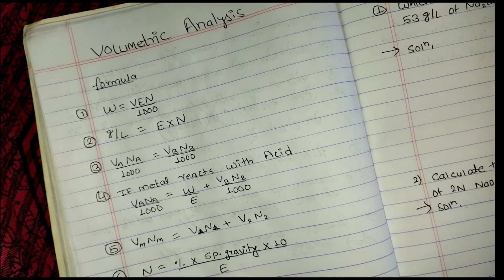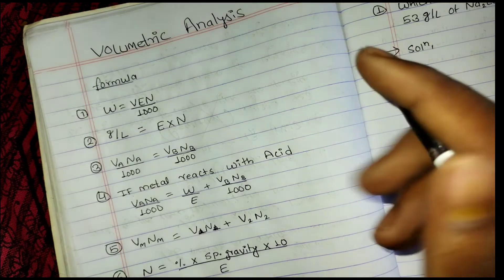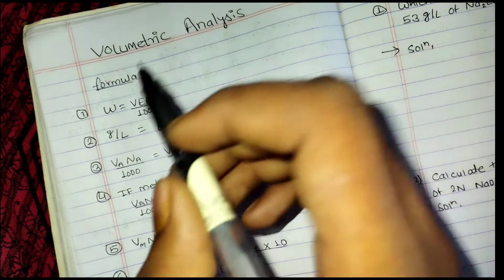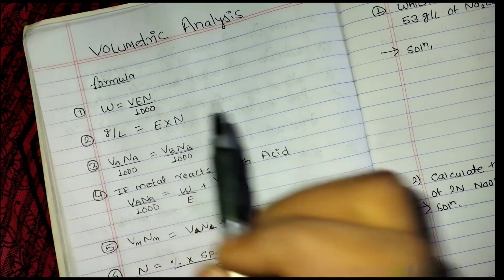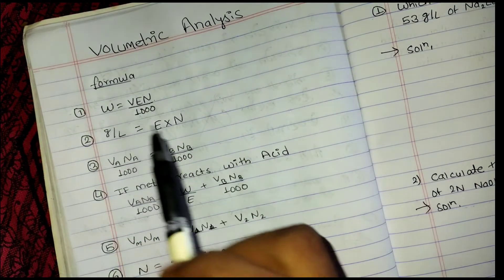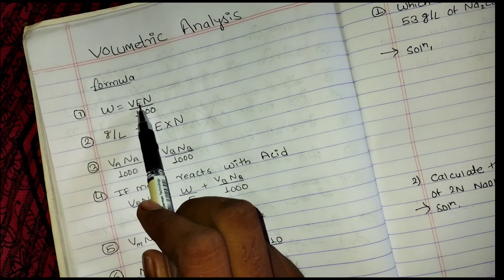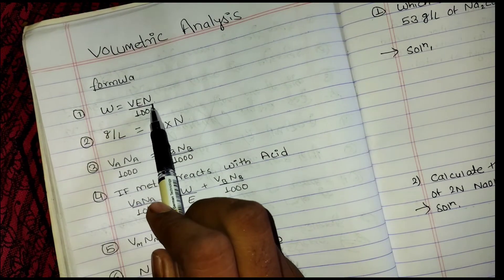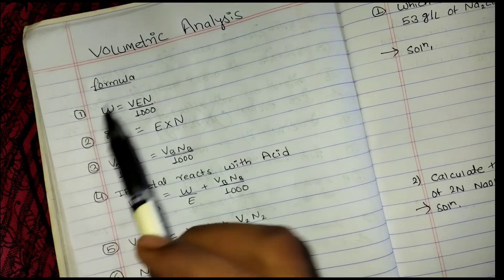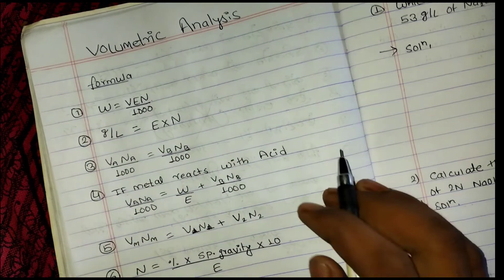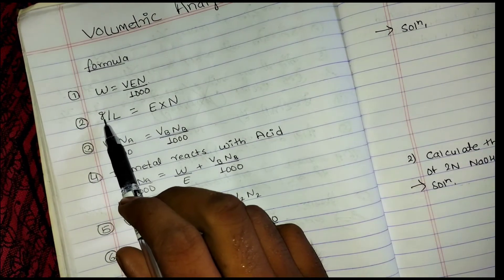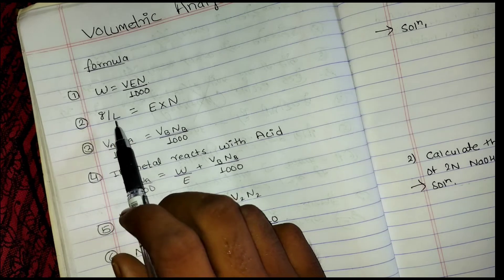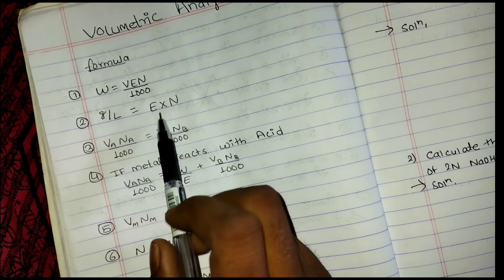In volumetric analysis, the key input formulas to remember are: W = (V × E × N) / 1000, where V is volume, E is equivalent weight, and N is normality. Another formula is gram per liter = equivalent weight × normality.